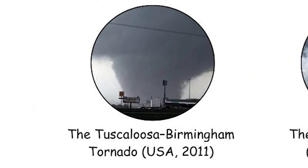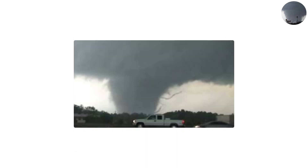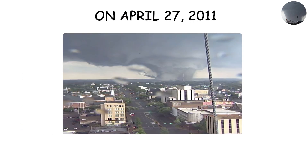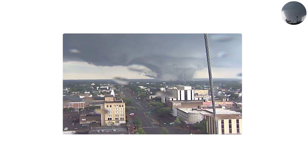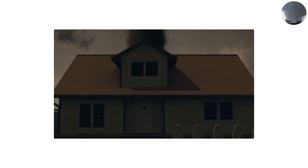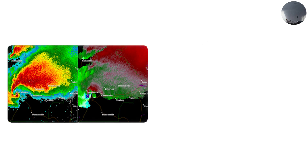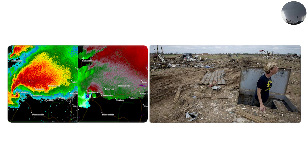The Tuscaloosa-Birmingham Tornado, USA, 2011. As part of the 2011 super outbreak, which generated 362 tornadoes across multiple states in a matter of days, the Tuscaloosa-Birmingham tornado stood out as one of the most devastating. On April 27, 2011, the tornado tore through densely populated parts of Alabama, killing 64 people and injuring more than 1,500. Rated EF4, the tornado traveled over 80 miles and reached a width of 1.5 miles, causing widespread destruction to homes, schools, businesses, and infrastructure. Despite being visible and well-tracked on radar, the tornado struck with such force that even people who had taken shelter found themselves in danger.